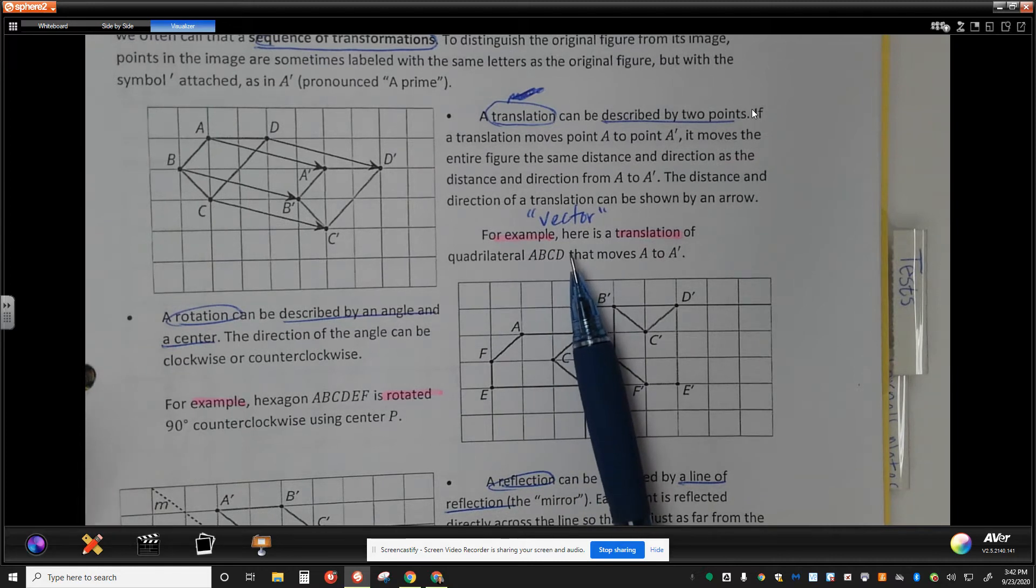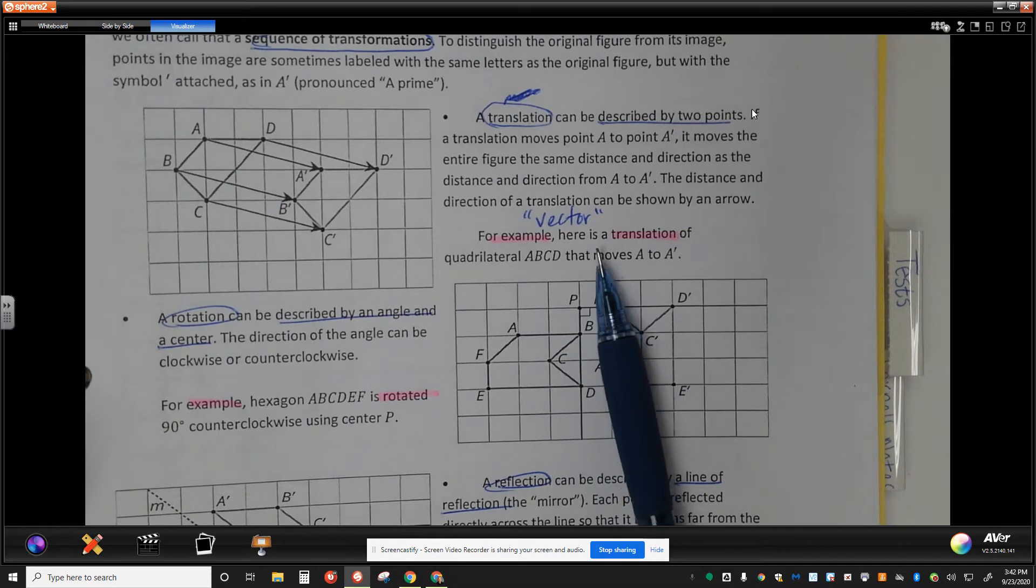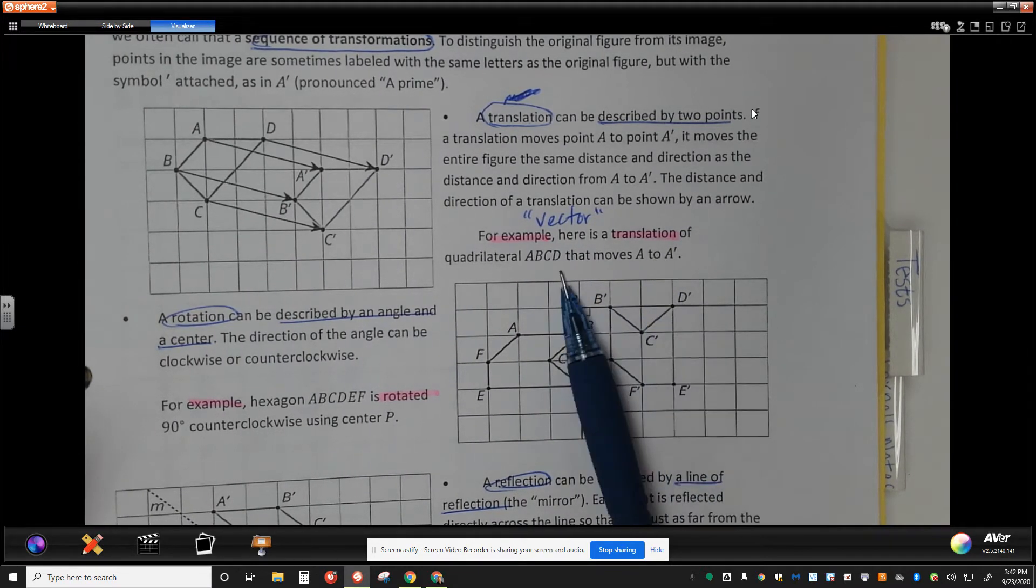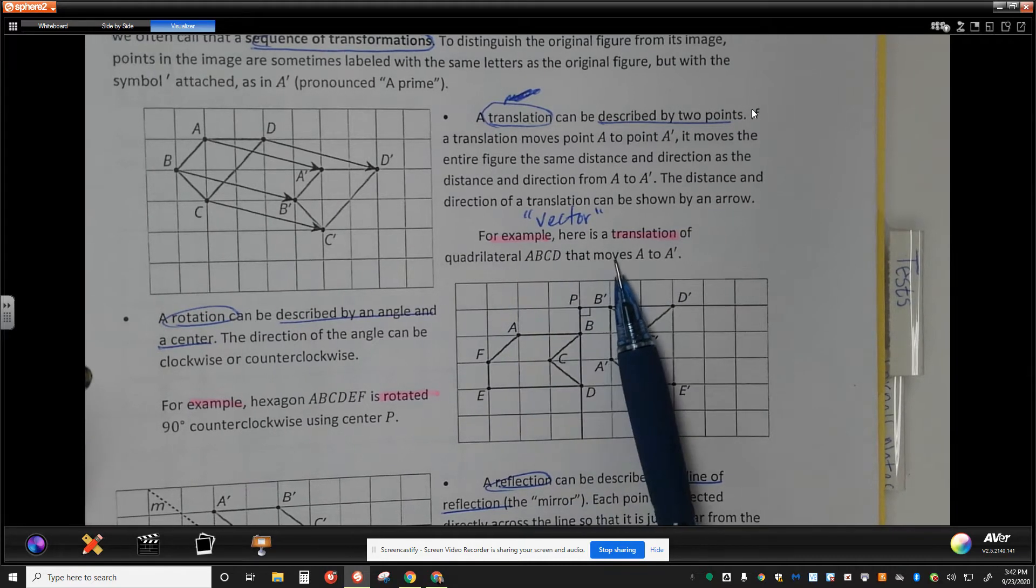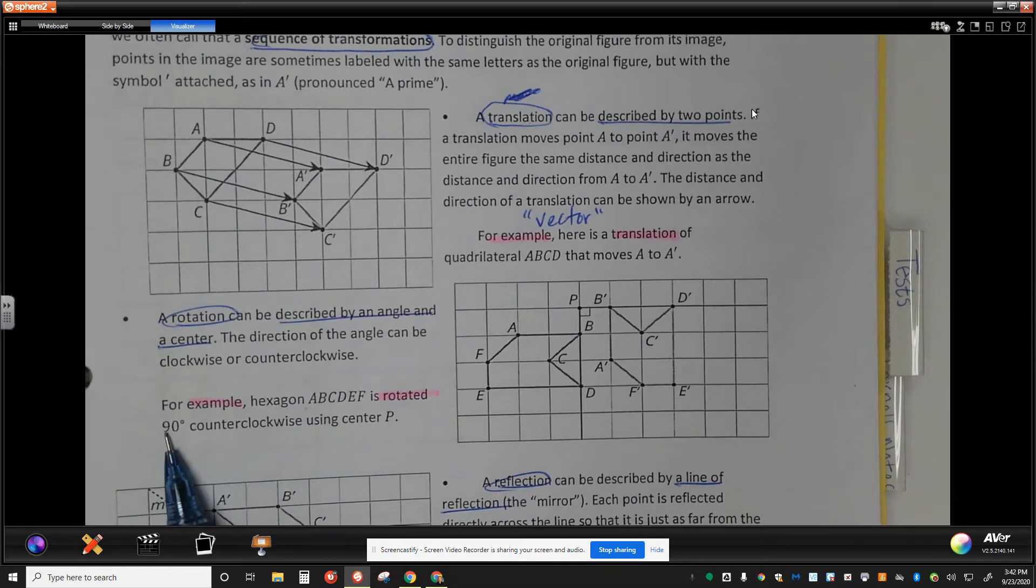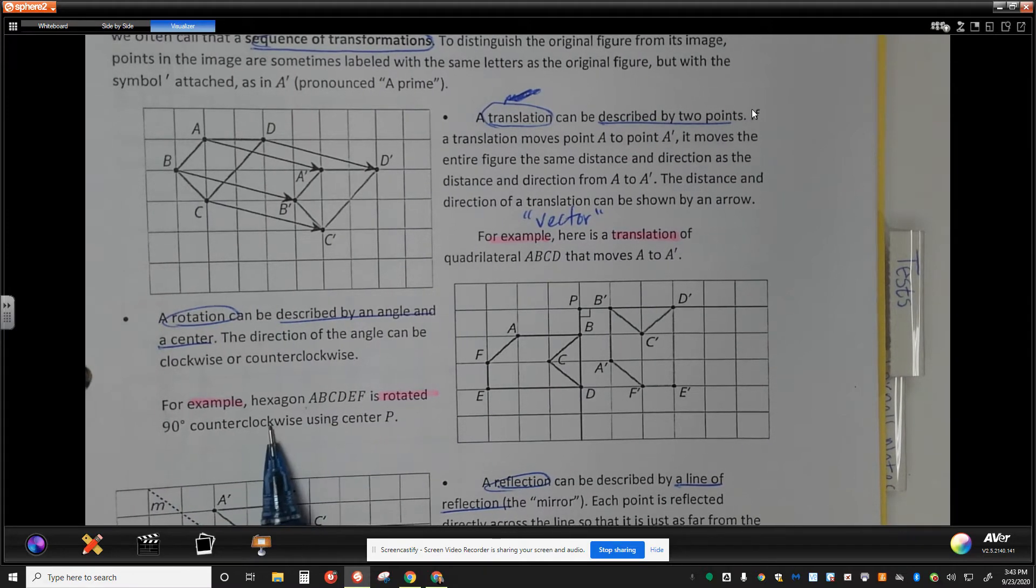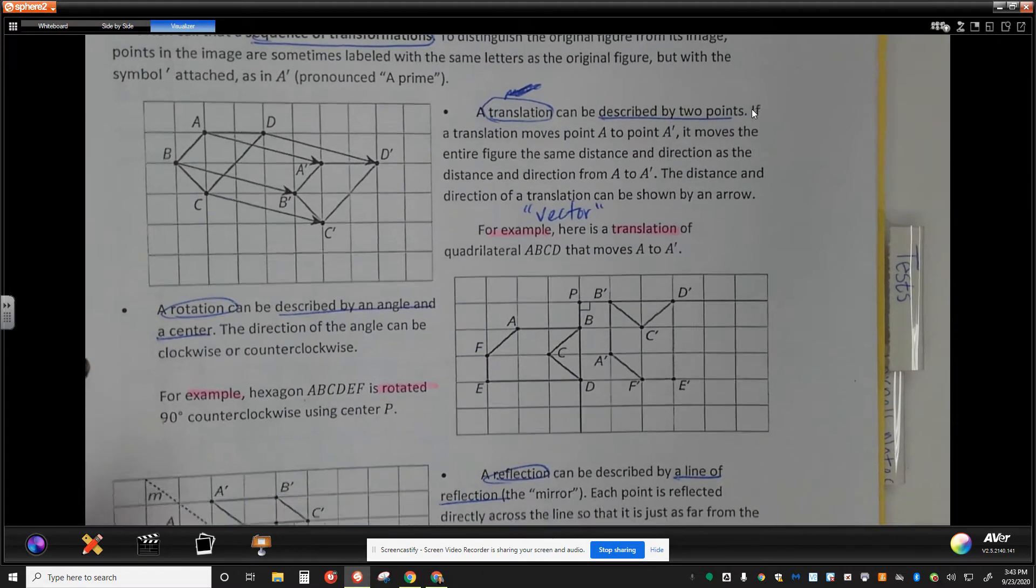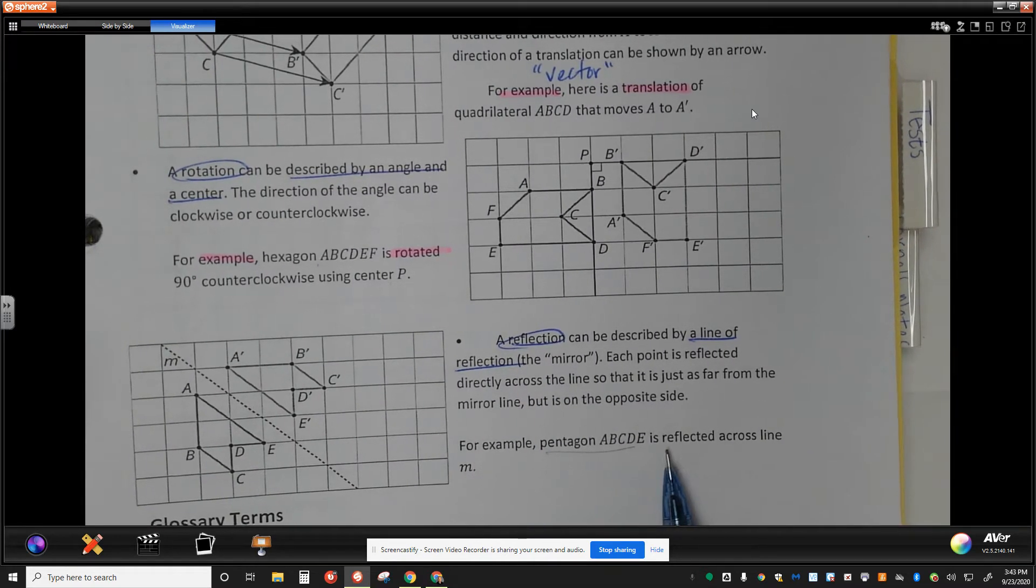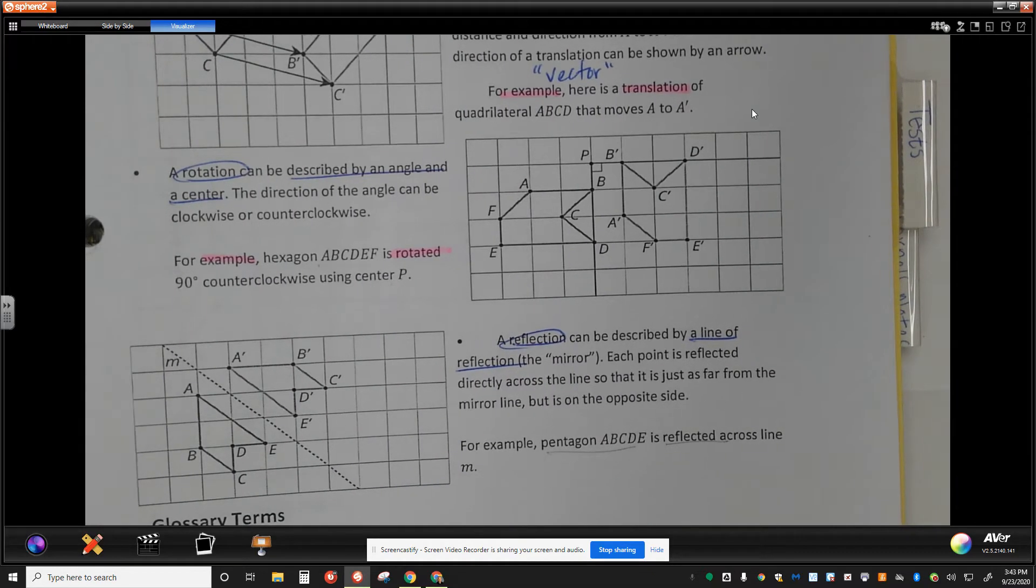When we're talking about precision of language here, if we have a translation, we have to talk about moving it either along a vector, or we're talking about moving, in this case, a quadrilateral along from a point to a point. When we talk about a rotation, we have to include the measurement describing the angle of the rotation as well as the direction and a center point. Don't forget that reflection, we have to talk about name the figure first, how we reflect it across some line, and that line should have a name.